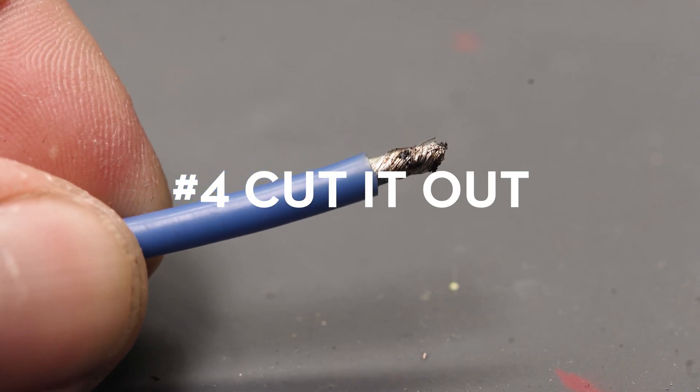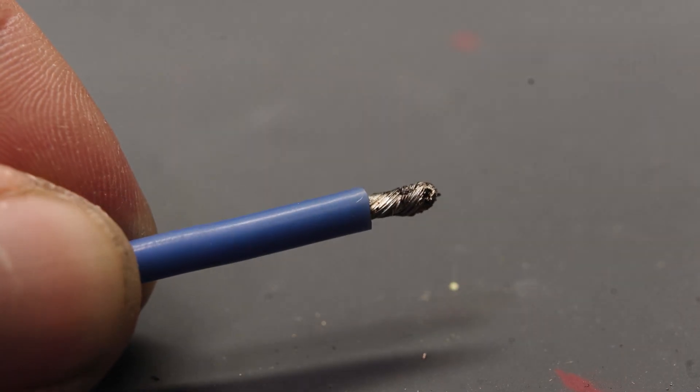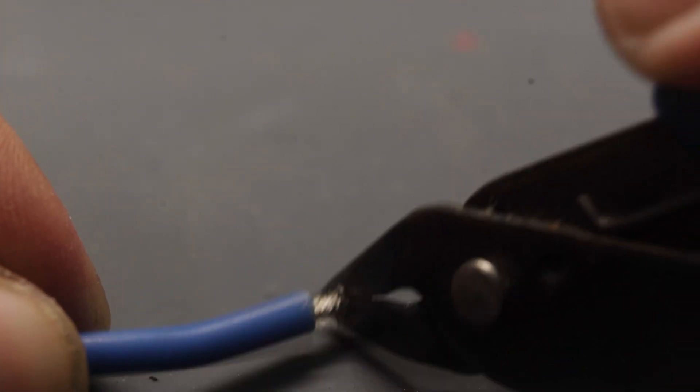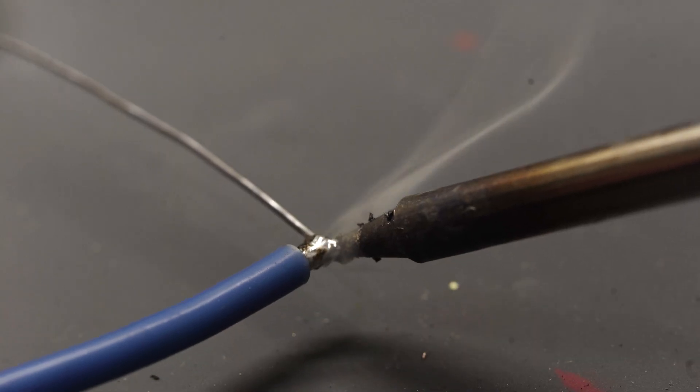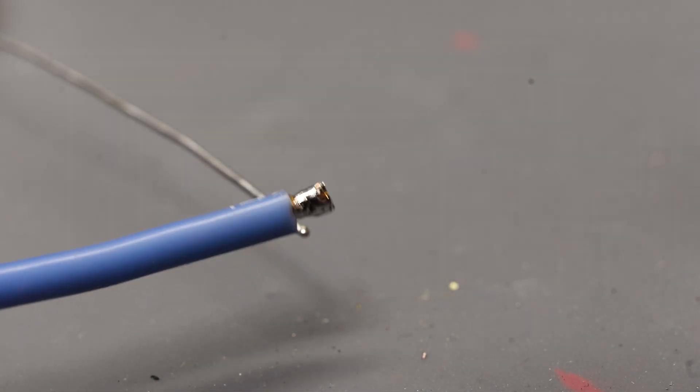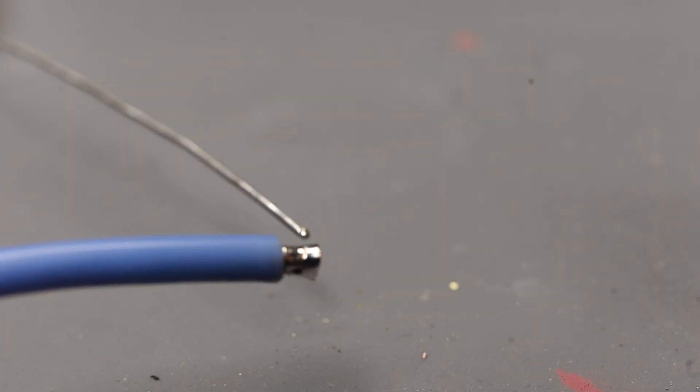Tip number four, basically you're cutting off the excess amount of wire so you don't have extra wires going everywhere that could potentially be touching other components. So we're going to go ahead and snip that off and then probably even pre-tin it again just to make it nice and clean.